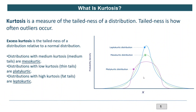For a platokurtic distribution, which is flat at the top, the tail is very thin. A thin tail means there is very little possibility of data falling on the tail — more or less the data will be very close to your mean and fall in the center. In other words, the possibility of outliers is very less in a platokurtic distribution.